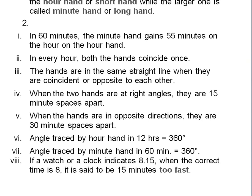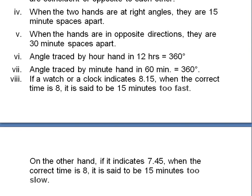If a watch or clock indicates 8:15 when the correct time is 8:00, it is said to be 15 minutes too fast — you have likely seen this when your watch is somewhat ahead. Similarly, if the clock indicates 7:45 when the correct time is 8:00, it is said to be 15 minutes slow — for example, when you need to go somewhere and your clock shows 7:45 but the bus is at 8:00.